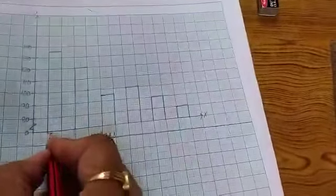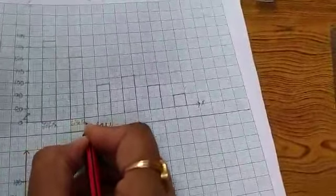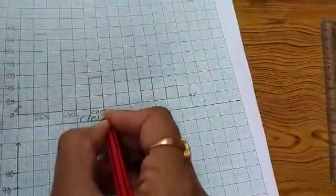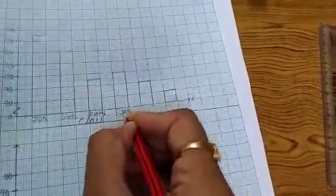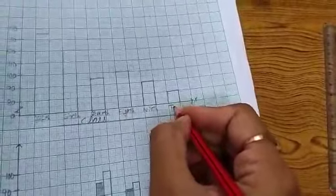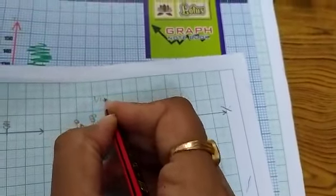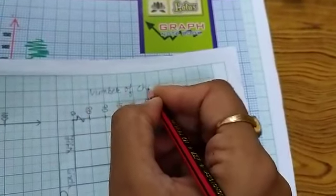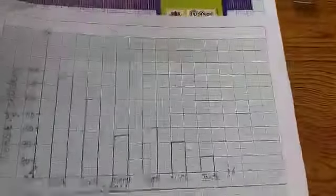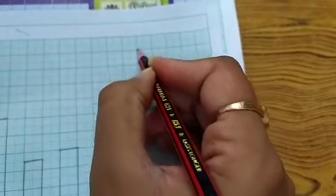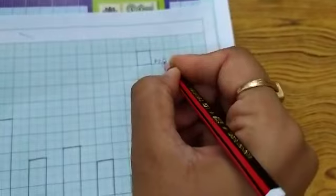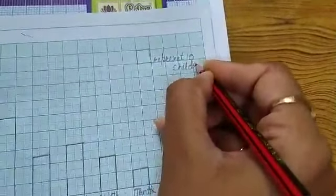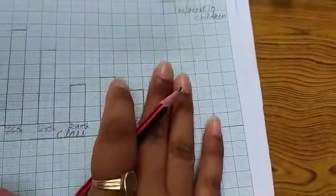Now, these are the classes. Write down class: 5th, 6th, 7th, 8th, 9th, and 10th. And these are number of children. Now make key. One box represents 10 children. This is our graph.